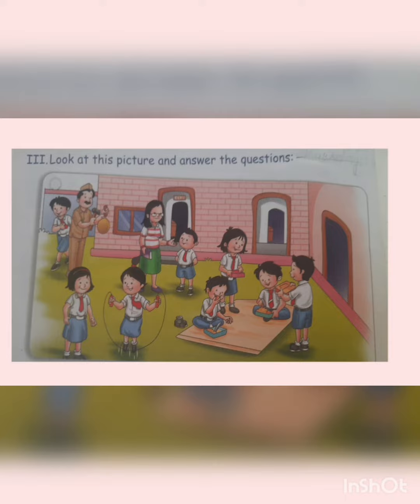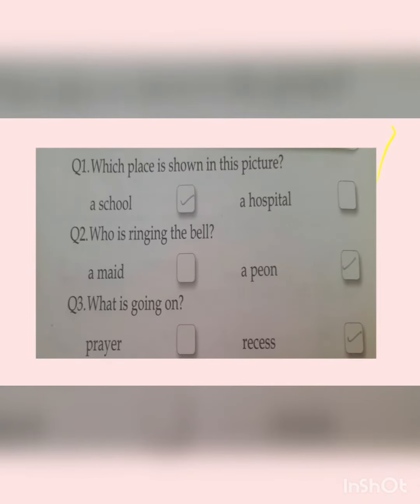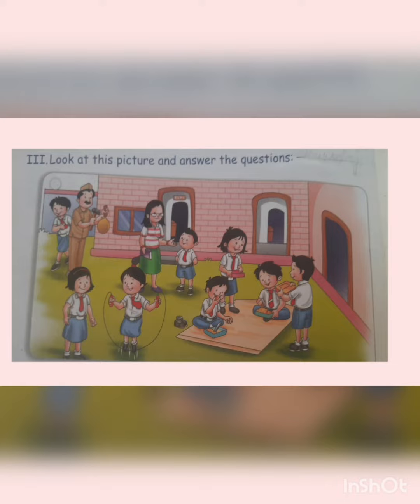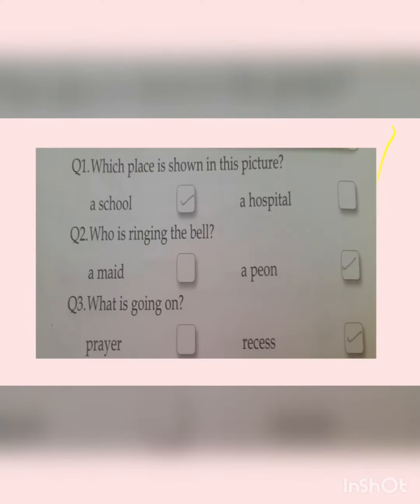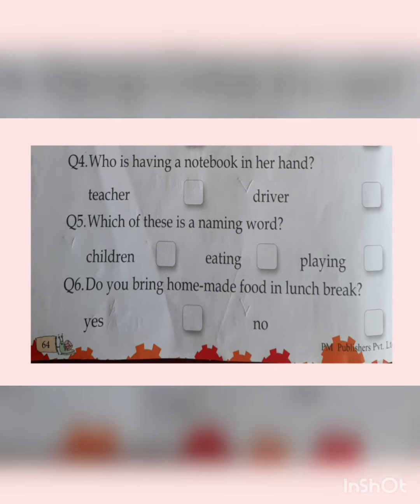One by one we'll give the answers. First — which place is shown in this picture? This is the picture of a school. You know it is a school — the place where we get friends, teachers, and a peon. Children are also there. So the answer is school. Who is ringing the bell? A peon. What is going on — prayer or recess? Obviously it is recess. Who is having a notebook in hand — teacher or driver? Teacher.